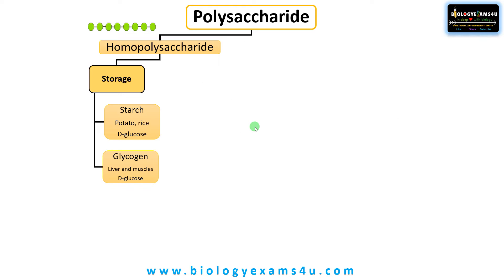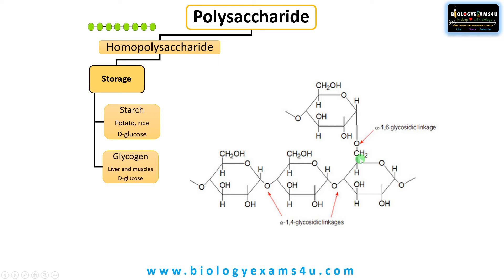The second storage homopolysaccharide is glycogen, the storage food in animals. It is made up of D-glucose units joined by alpha-1,4 glycosidic linkage and alpha-1,6 glycosidic linkage. Glycogen is much more branched compared to starch and is stored in the liver and muscles.